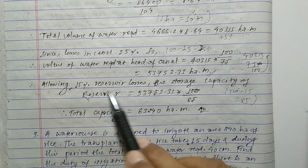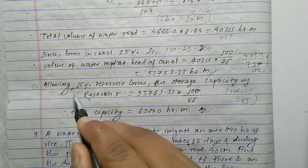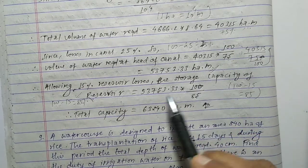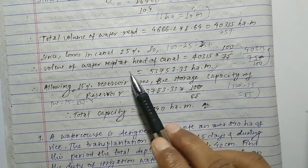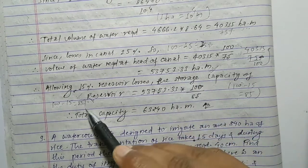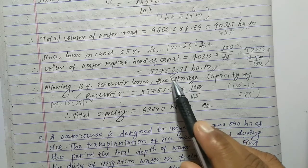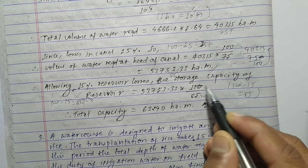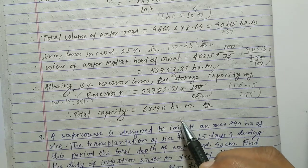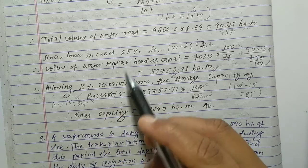To account for the 15% reservoir loss, the remaining water is 85%. We divide the canal head volume by 85%, that is 53,753.33 divided by (85/100). This gives the total reservoir capacity as approximately 6,240 hectare-metres. In this way, we can calculate the total capacity of the reservoir considering both canal loss and reservoir loss.